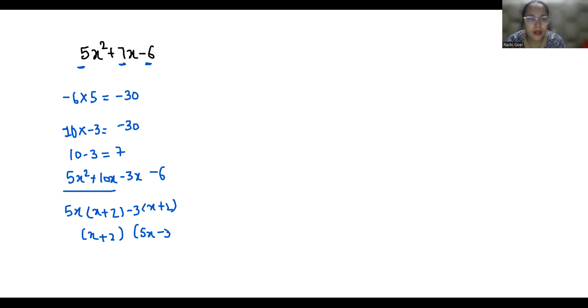Now let's verify. First, x plus 2. I am going to take it equals to 0 to find the value of x, that is minus 2. So my equation is 5x² plus 7x minus 6. So 5 times minus 2 squared plus 7 times minus 2 minus 6.